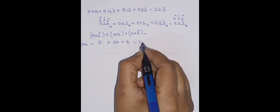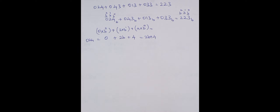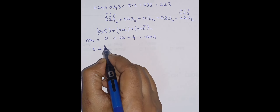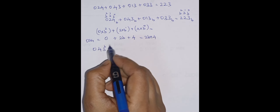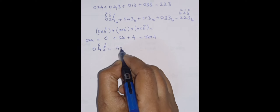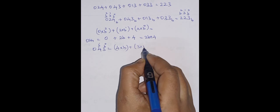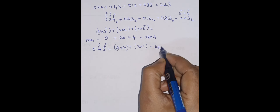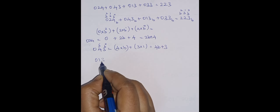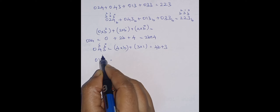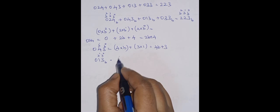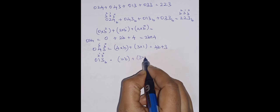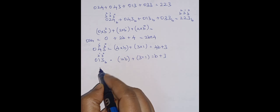For the second term 043: zero multiplied by b squared equals zero, so we only consider four into b power one plus three into b power zero, which gives 4b plus 3. For the third term 013: one into b plus three into one, which equals b plus 3.